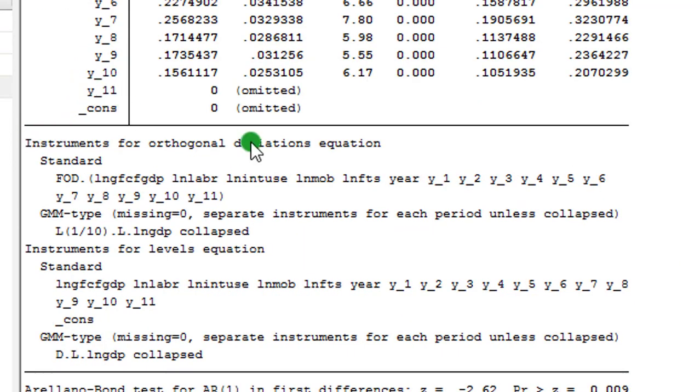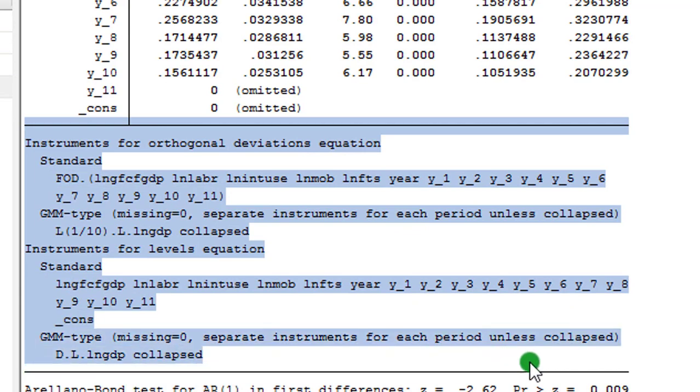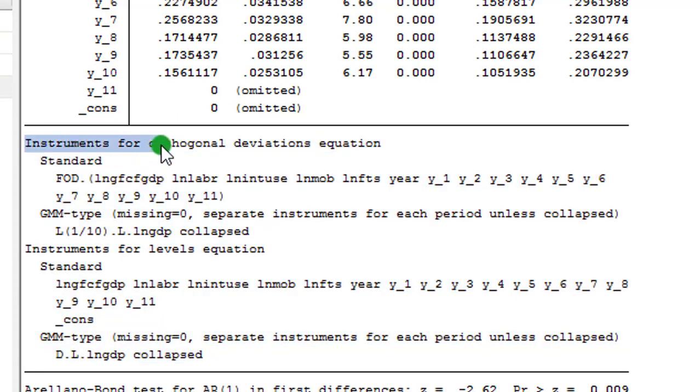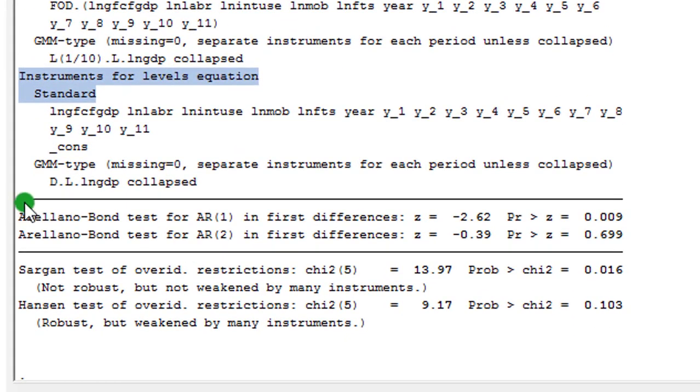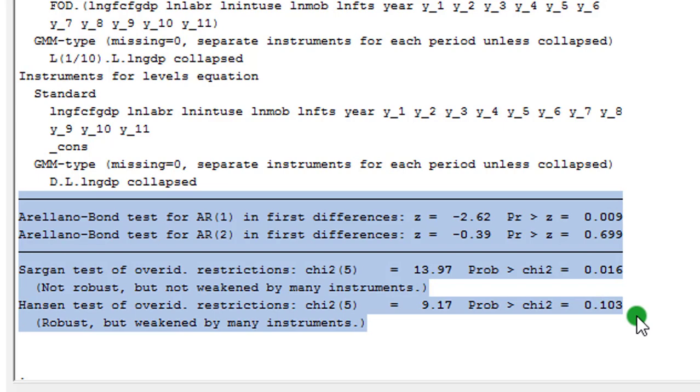Immediately after the results, we have this portion which shows the way your instruments are computed in this particular output. We have two classes of instruments. We have the first one, which is for orthogonal deviations equation. That is for the first difference equation. And we have instruments for the level equation. Immediately after that, we now have the statistics for the AR1, AR2, Sargan, and Hansen. By now, I'm very sure that most of you can easily interpret your AR1, AR2, Sargan, and Hansen. Because I've been talking about this right from the onset of this GMM series. So like I said, this is how a typical GMM result looks like.